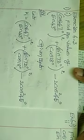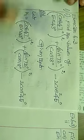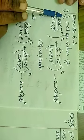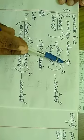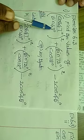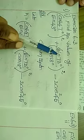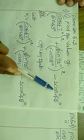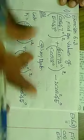Good morning students. For all 9th standard students, we are going to see Exercise 6.3. The first question: find the value of cos 47 degree divided by sin 43 degree, the whole square, plus sin 72 degree divided by cos 18 degree, the whole square, minus 2 cos square 45 degree.